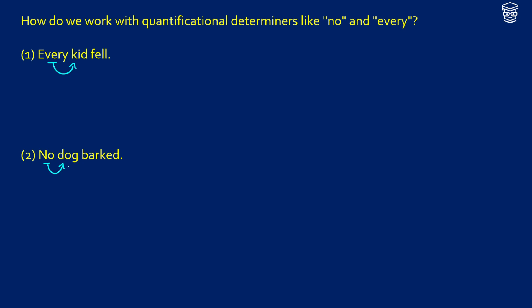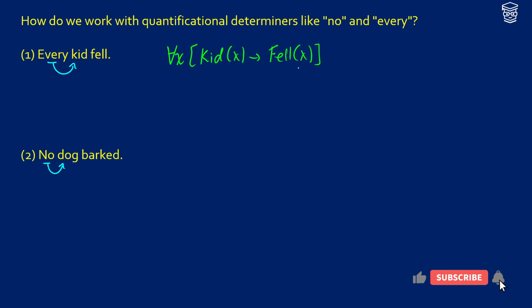Let's start with 'every kid fell' and think about our predicate logic translation to motivate what we're going to do with 'every.' If we're going to translate this, we're going to say something like: for all X, if X is a kid, then X fell. So this is going to be our base.